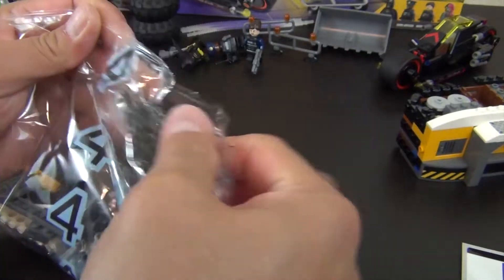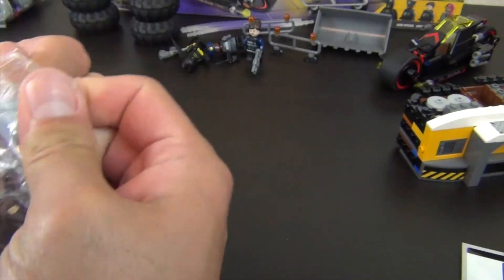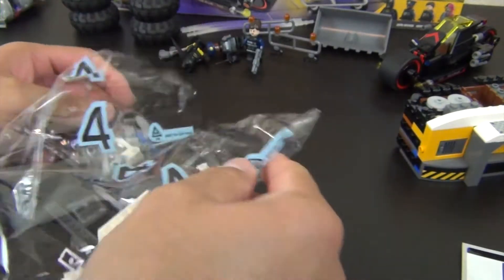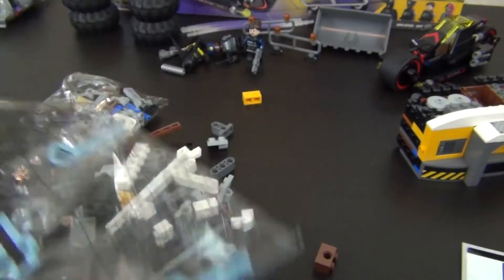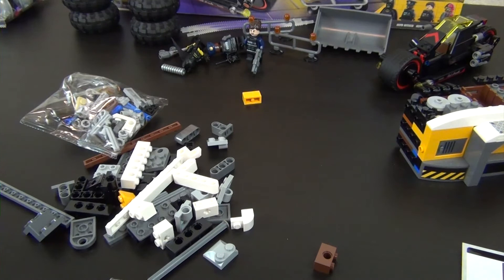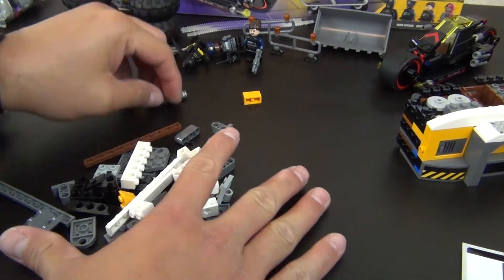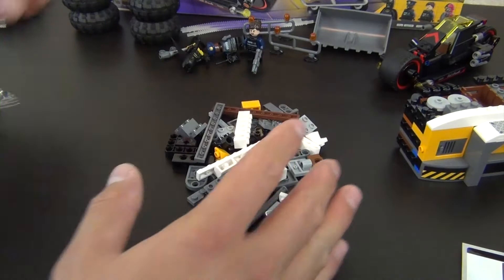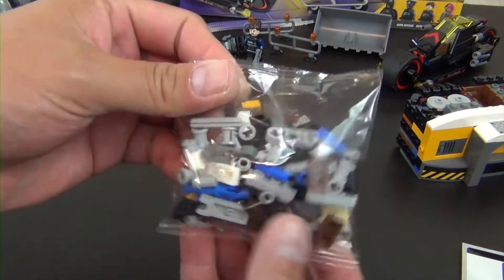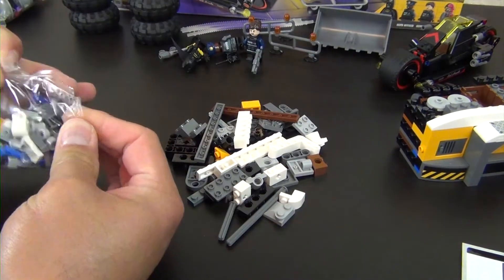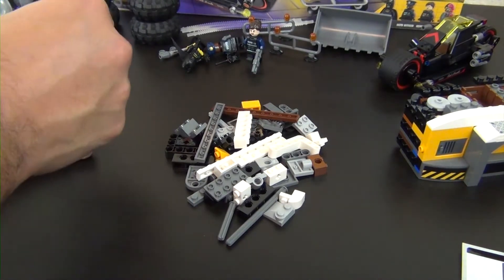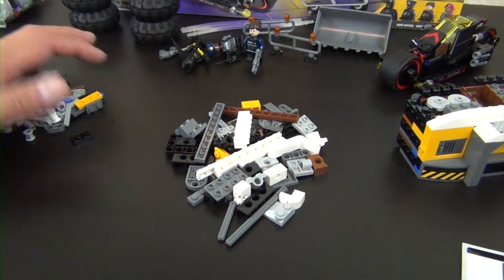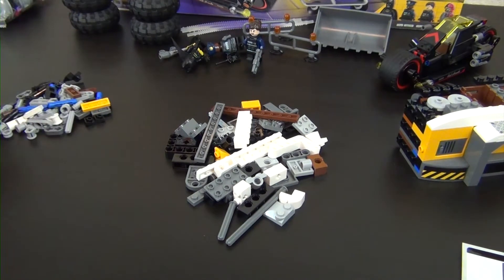We have two more bags of parts - there's a bag four and a bag five yet to go. I'll go ahead and get bag four parts out. Make sure we have everything where I can see it. And then there's a small bag of parts in that bag - the majority of the parts for this bag is in that really small bag.